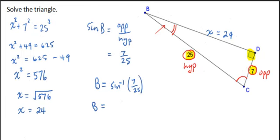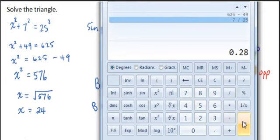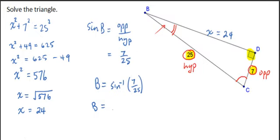What's that equal to? Well, we need to do 7 divided by 25, and then press inverse sine. So I'm getting 16.3 degrees if we round off. 16.3 degrees for B.